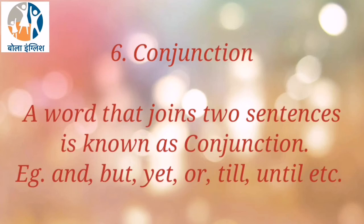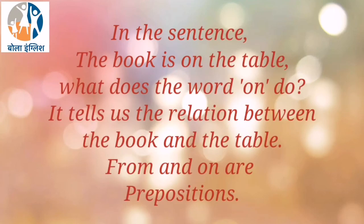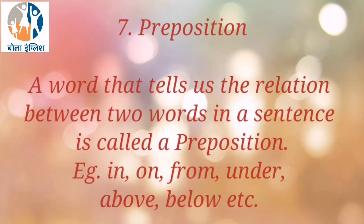What is a conjunction? A word that joins two sentences is known as a conjunction. For example: and, but, yet, or, till, until, etc. In the sentence 'Shreya came from office and hugged her little daughter lovingly,' the word 'from' tells us the relation between Shreya and office. In 'The book is on the table,' the word 'on' tells us the relation between the book and the table. From and on are prepositions. A word that tells us the relation between two words in a sentence is called a preposition. For example: in, on, from, under, above, below, etc.